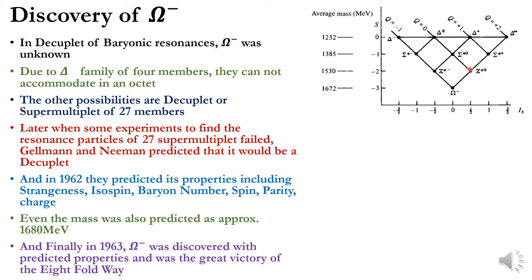At that time, three levels of the decuplet were known, so the mass of the unknown Ω⁻ at the lowest level was calculated as 1530 plus 150, equal to 1680 MeV. Finally, in 1963, Ω⁻ was discovered with the predicted properties, and it was a great victory for the Eightfold Way. All scientific attention was drawn to the world of particle physics due to this remarkable prediction and its subsequent verification.